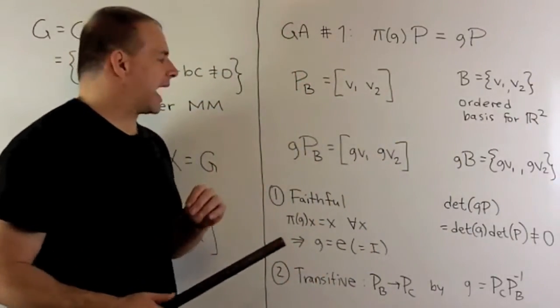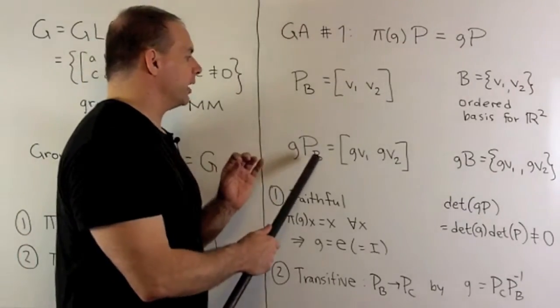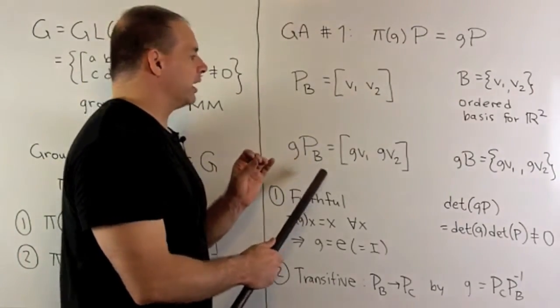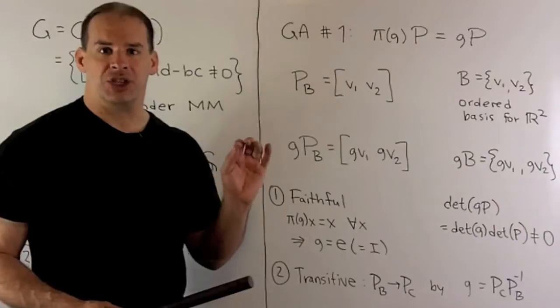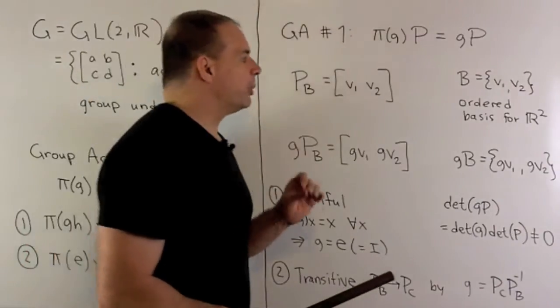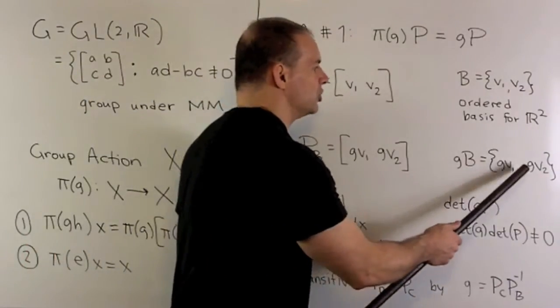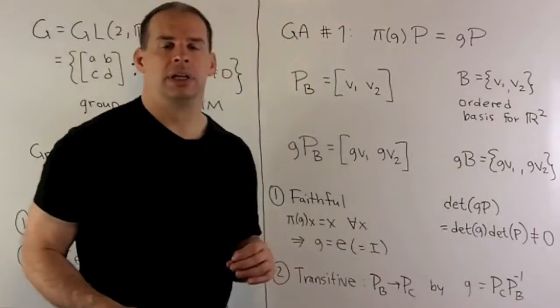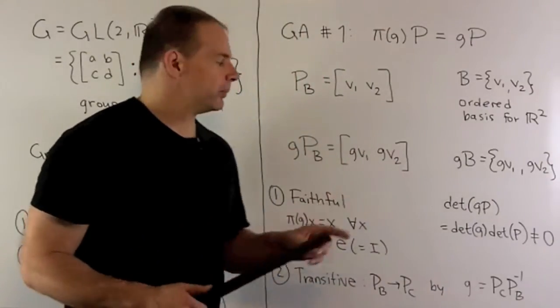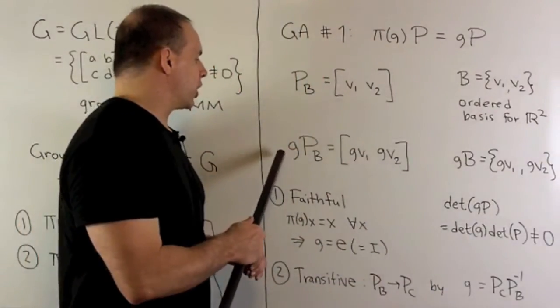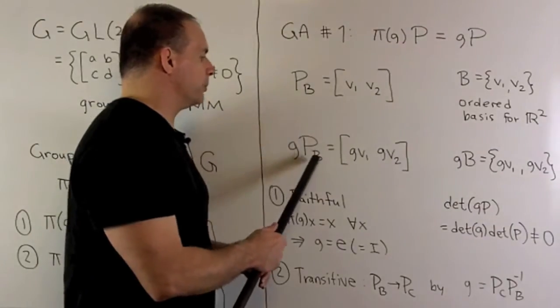Now, if we apply G to P_B, the effect is just going to be to let G act on each column. So, we'll get a new basis, GV1, GV2. To see the basis property, note,